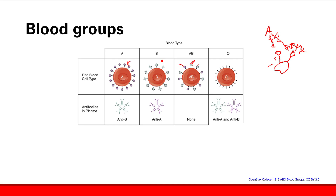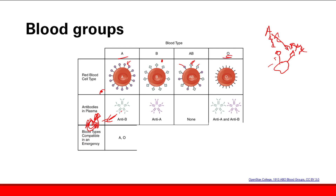Now we care about this in blood transfusions. You don't want to give blood that the patient has antibodies against. Because if a type A patient gets type B blood, the antibodies are going to attack that type B blood and destroy it — it's going to cause problems. So what kind of blood can a person with type A red blood cells get? They can't get any blood that has type B on it. Type A doesn't have B antigens on it; type O doesn't have B antigens on it. So they can get type A or type O.